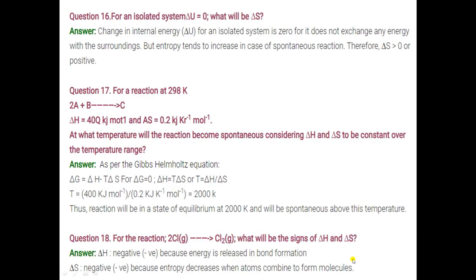This is question number 15. Question number 16: for an isolated system ΔU = 0. What will be ΔS? ΔU = 0 means internal energy of the system is zero. Entropy means degree of randomness, and randomness keeps on increasing. When degree of randomness increases, value of ΔS will be positive — that means ΔS > 0.